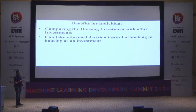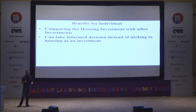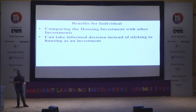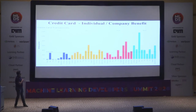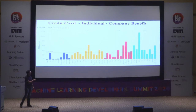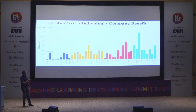These are the benefits: we can compare housing investments with other investments, which helps us take an informed decision about whether a house is the right asset or if another asset gives better returns. Moving to credit cards — this is my favorite. By this simple visualization we can see how this individual spent money: he started slow in 2016, then got into the habit of spending more and that habit kept increasing, which benefits the banks.